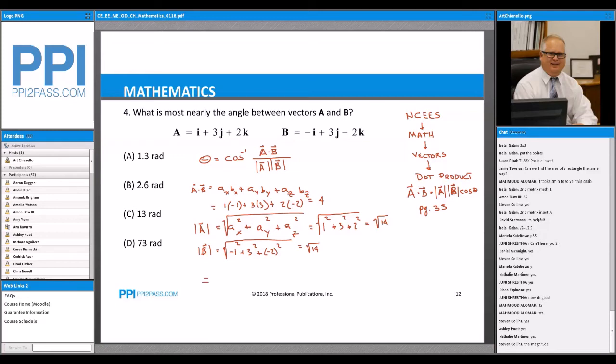So, therefore, theta is equal to the arc cosine of a dot b, which is 4, all over the square root of 14 times the square root of 14, which is equal to 73.4 degrees.